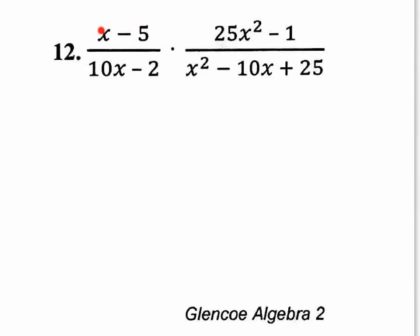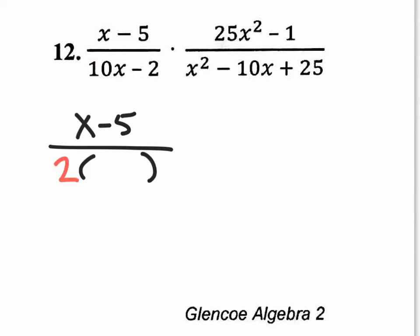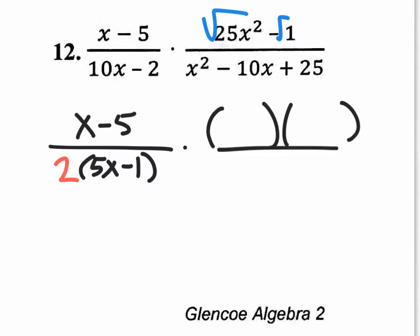So if we look at this top one, you can't do anything with that, so we're just going to rewrite it. The bottom one, you could pull out the GCF of 2. And if we pull out a 2, we're going to end up with 5x minus 1 left over on the inside. Now let's take a look at this top right numerator. This is a difference of two squares — that's a perfect square term, that's a perfect square term. So I could square root it, square root it, and then plug it into my answer format. The square root of 25x squared is 5x, and the square root of 1 is 1. So 5x and 1 is going to be on both binomials. And because there is no middle term, one has to be a plus and one has to be a minus. So that's how we factor this one up here.